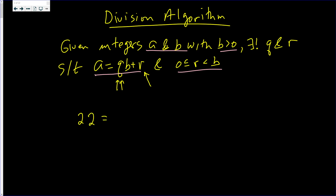For example, 22 equals 3 times 6 plus 4. The quotient is 6, the remainder is 4. But I can use a larger quotient — 7. Then the remainder is just 1. You make Q larger, R gets smaller.